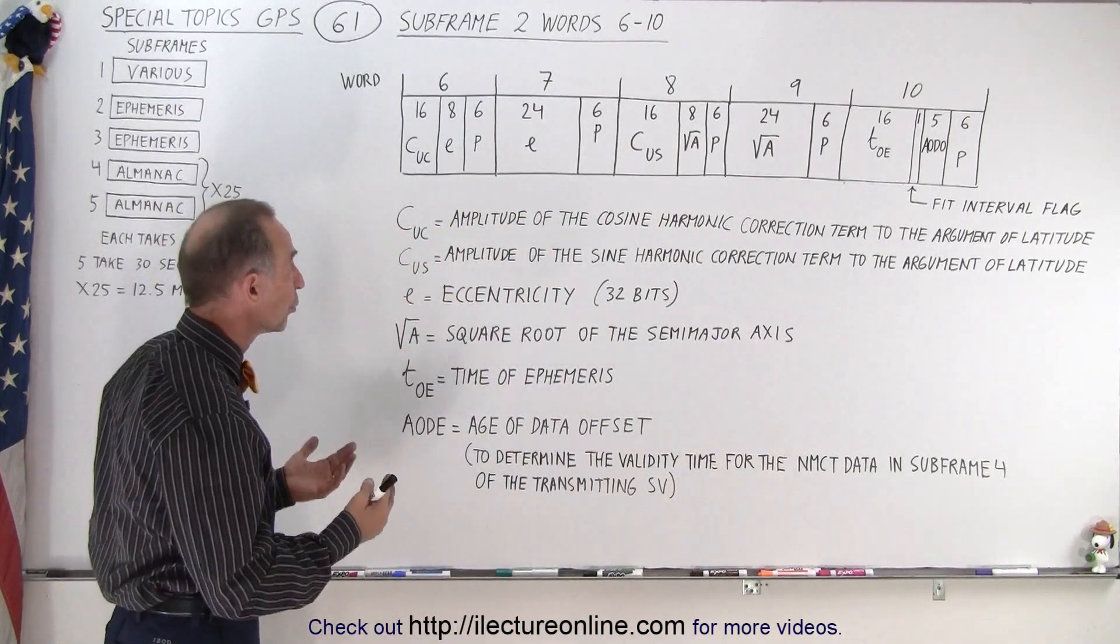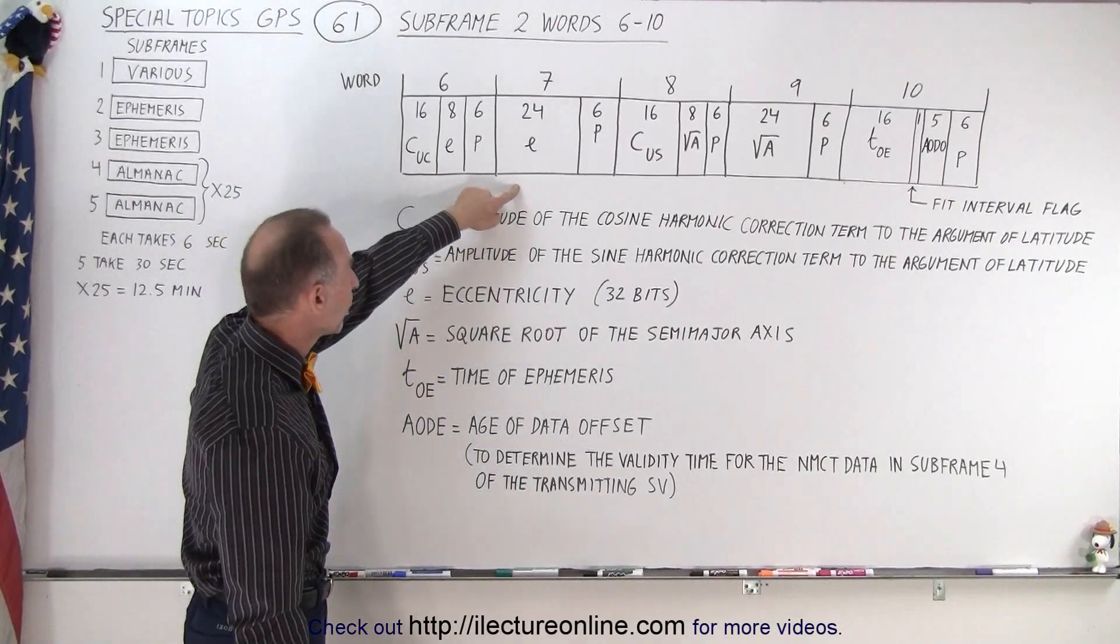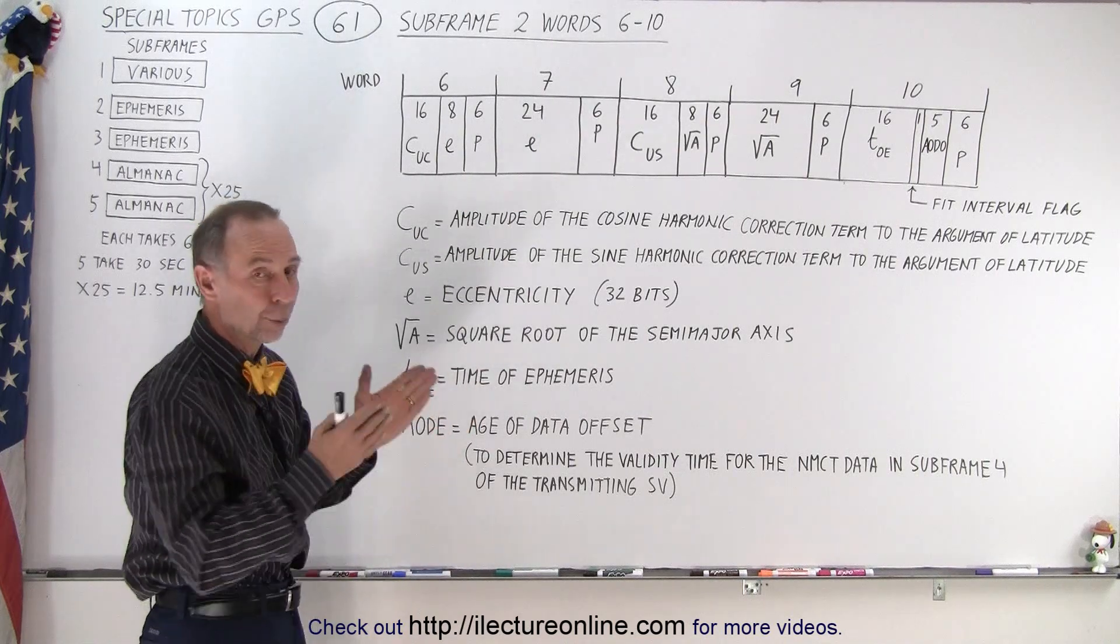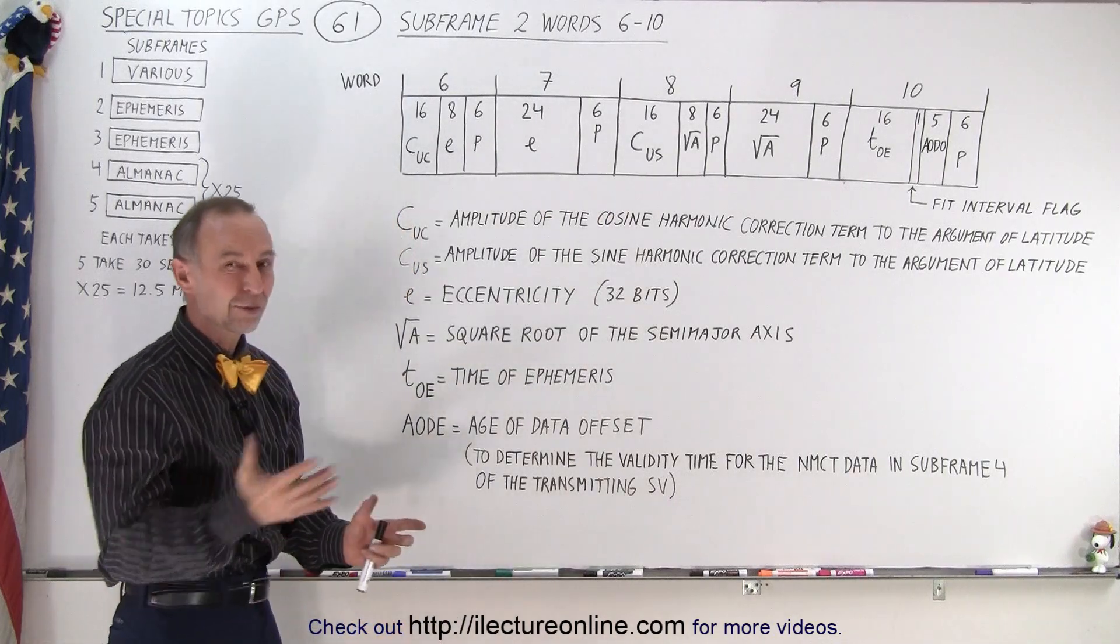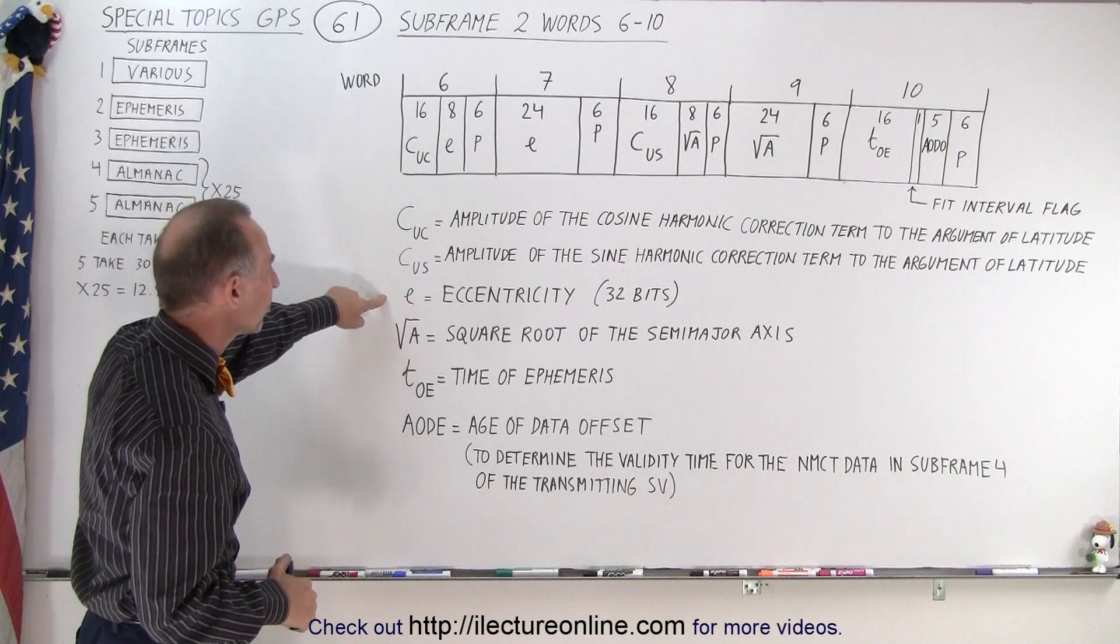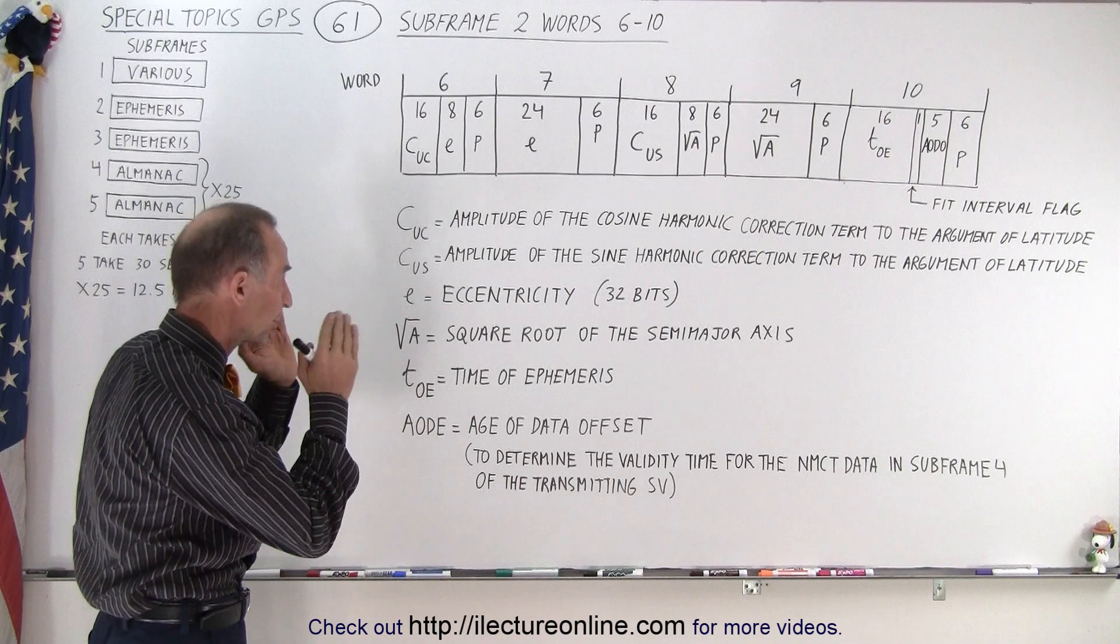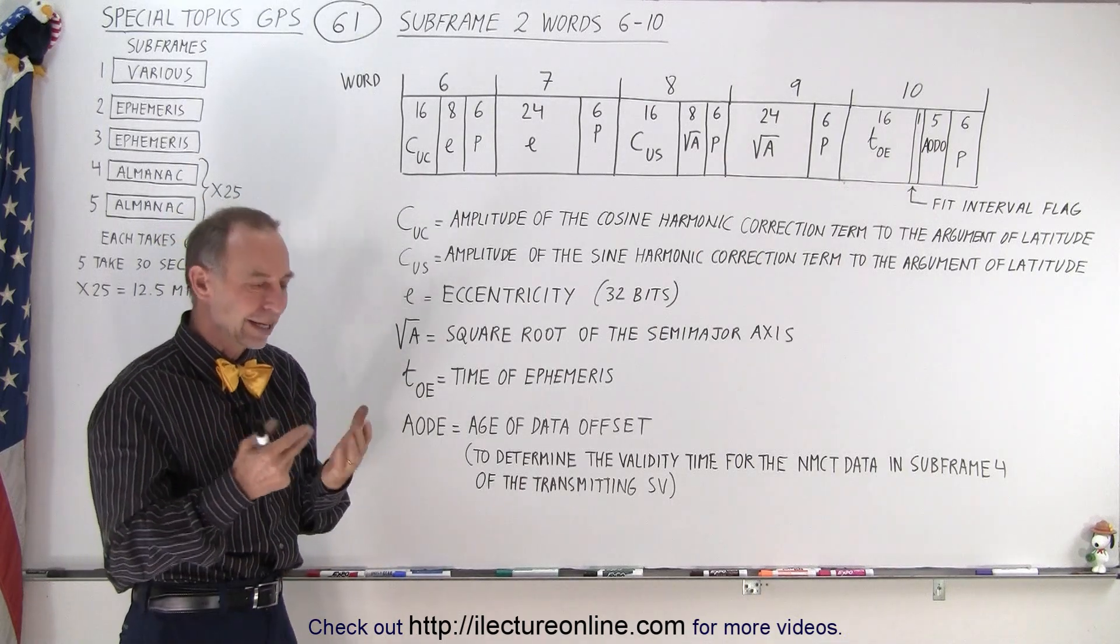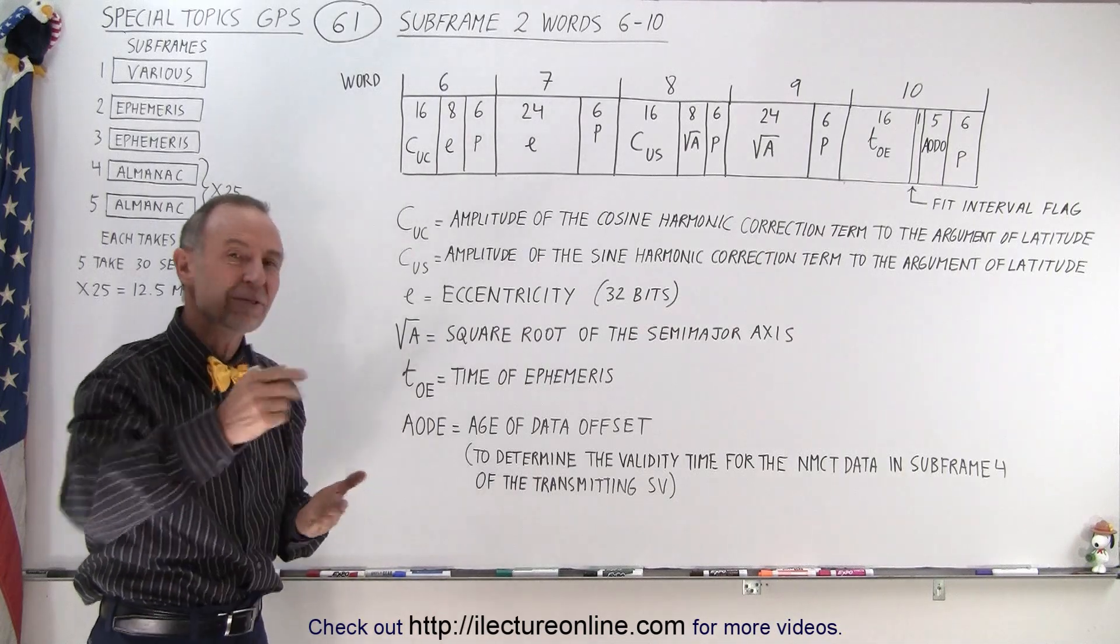Then we have a lot of room for the eccentricity. We have 8 bits in word 6 and 24 bits in word 7. Notice 24 bits is the totality of all the bits in a word that could be used, because you always need 6 bits for the parity bit to make sure the transmission of each word was correct. That's the eccentricity of the orbit of the satellite transmitting the ephemeris data. We have allocated 32 bits for that, which is an indicator that we want that data to be extremely accurate to as many significant figures as we can.